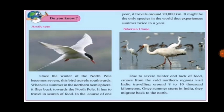The next example is the Siberian crane. Due to severe winter and lack of food, cranes from the cold northern regions visit India, traveling around 8,000 to 10,000 kilometers. Once summer starts in India, they migrate back to the north. This is how animals and birds adapt to the seasons and sometimes have to migrate — just as we migrate to different places. Here we end this chapter. We will learn the next chapter in the next video. Thank you for listening, children. Goodbye, take care.